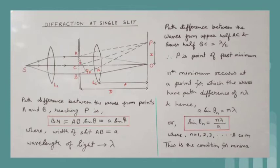Thus point P is the position of the first minimum. In the same manner, we find the point for which the path difference between the waves from the two halves of the slit is 2 lambda, and that point is the position of the second minimum.